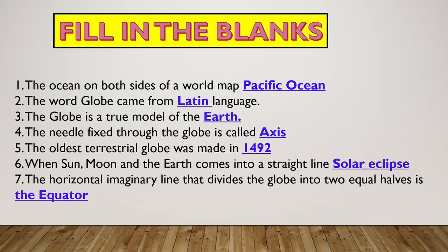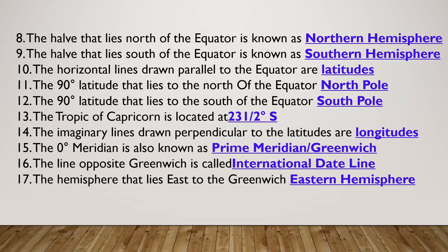The horizontal imaginary line divides the globe into two equal halves - that is the equator. The half that lies north of the equator is known as the Northern Hemisphere, and the half on the south side is the Southern Hemisphere. The horizontal lines drawn parallel to the equator are called latitudes.